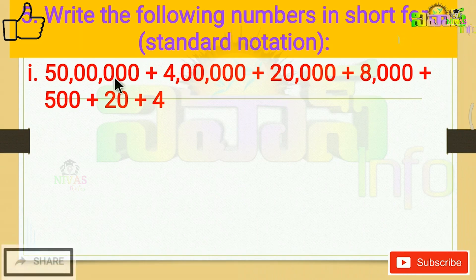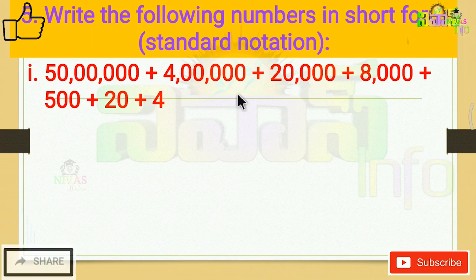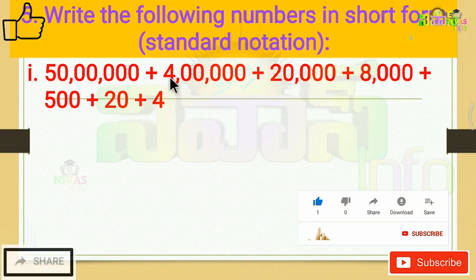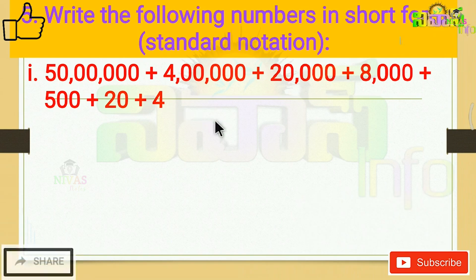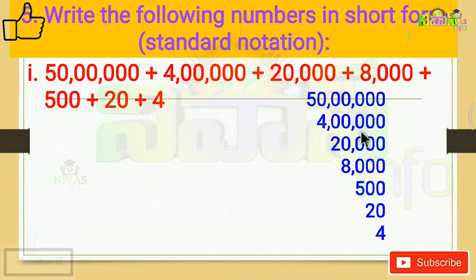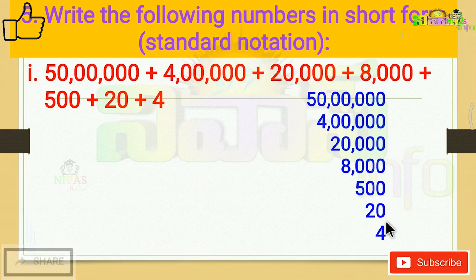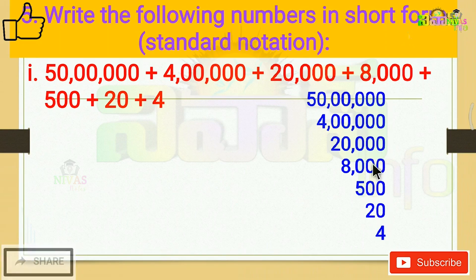This is also simple. The first formula: 50 lakhs, 4 lakhs, 20,000, 8,000, 500, and 4. We need to check the place values: ones, tens, hundreds, thousands, ten-thousands, lakhs, ten-lakhs.